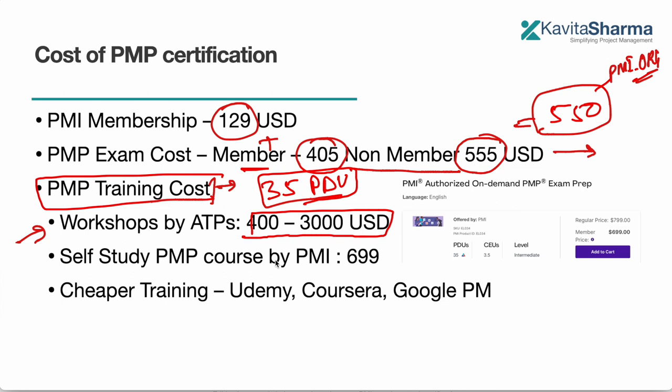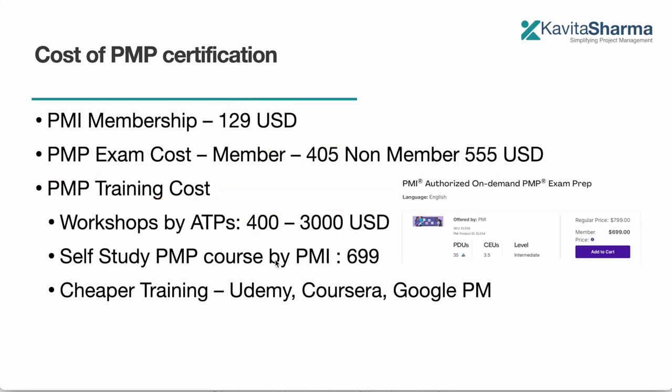So search and see which one works for you. The second option, if you don't want to get into a classroom or a virtual class, then you can go with self-study course by PMI. This is 699 US dollars, and you can see this if you search for PMI authorized self-study or on-demand course. You're going to land into this page, so you can buy this course and can start preparing.